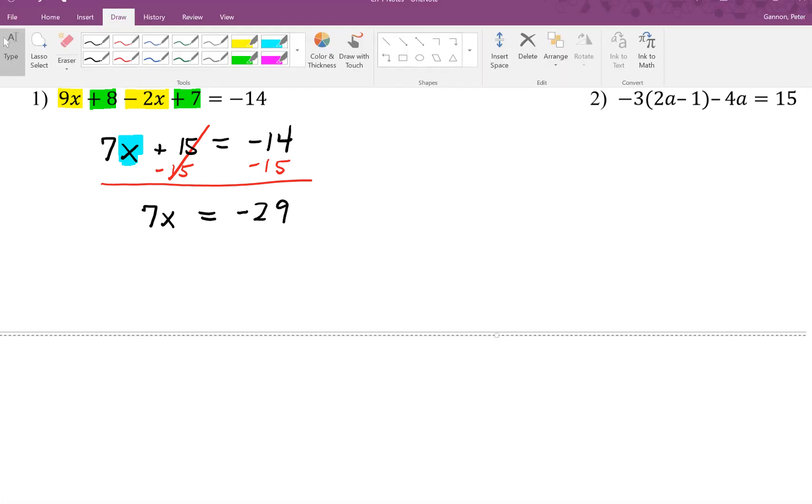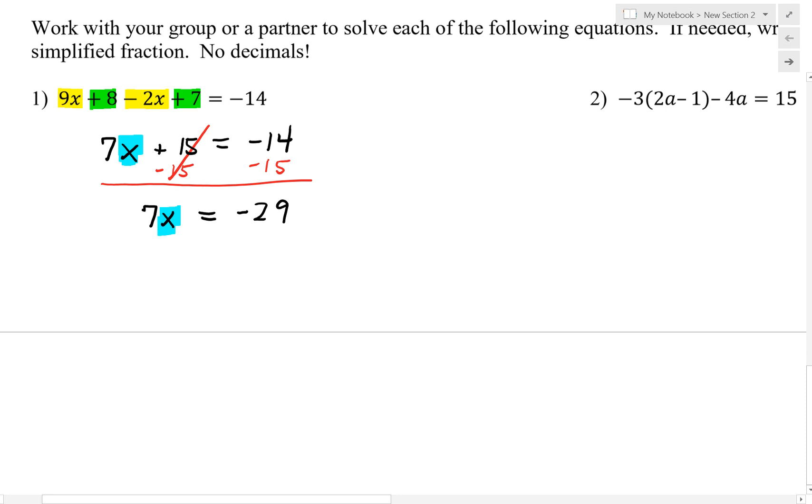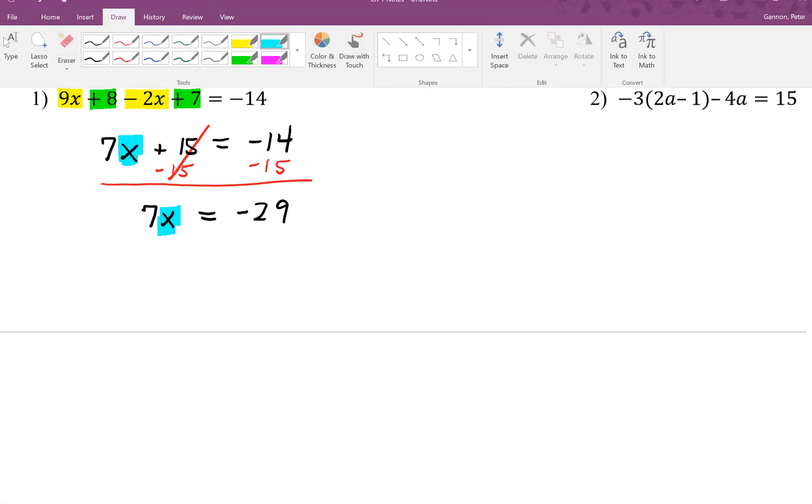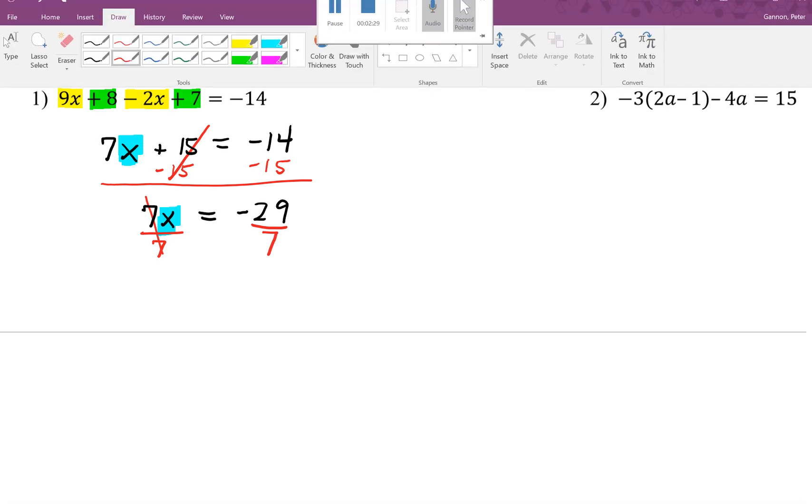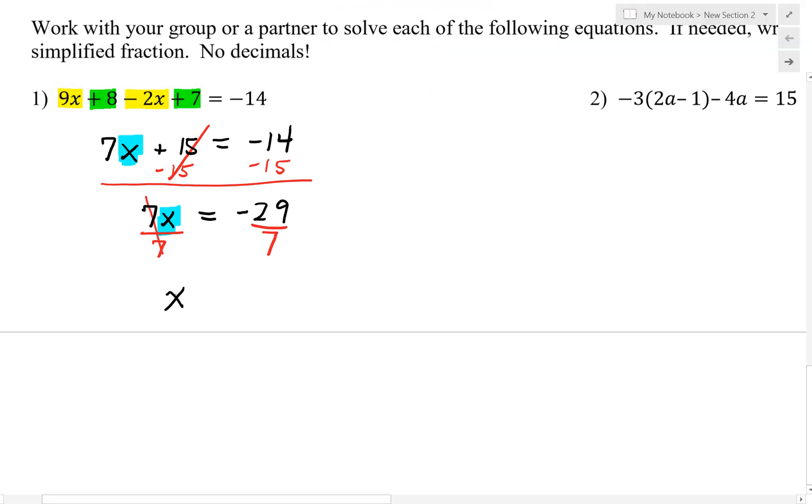We're closer to having the x alone, but we're not quite there. In order for us to finish, we have to get rid of 7. Since that 7 is being multiplied by the x, we're going to do the inverse of multiplying, which is division. We're going to divide both sides by 7. We have now successfully isolated x. Bring down the equal sign. With fractions, if we can reduce, we have to reduce. In this case, we can't reduce, so we're going to go ahead and leave our answer as negative 29 over 7.